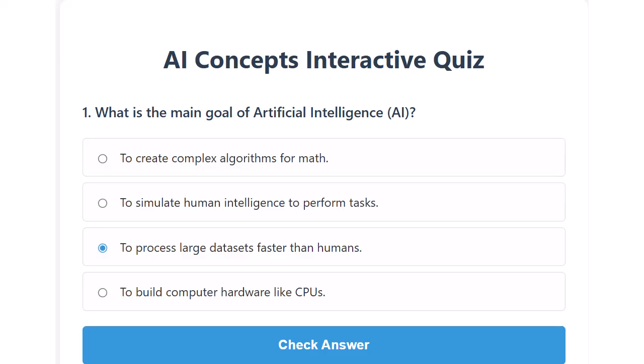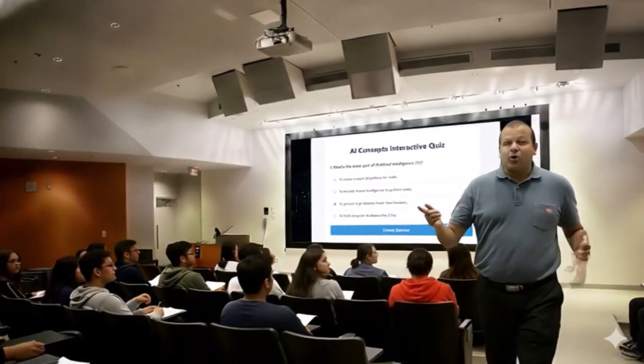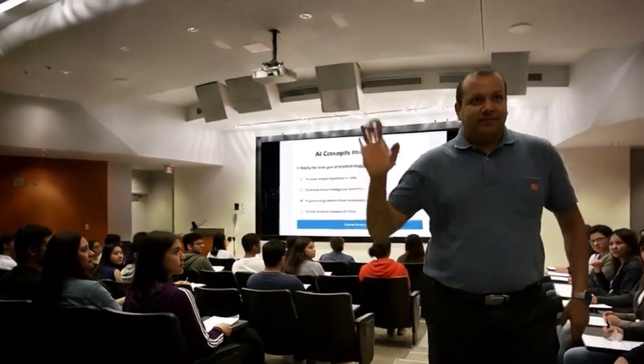To help solidify what we've learned, I've prepared a short 10-question quiz. Each question will pop up one by one, allowing you to select your answer, receive immediate feedback, and then move on to the next. Please click on the link provided in the description or chat to access the interactive quiz — it will open in your web browser. Take your time with each question, think back to what we've discussed on the slides, and see how well you've grasped these fundamental AI concepts. Once you complete all 10 questions, you'll get your final score. Good luck. Goodbye for now, and thank you.